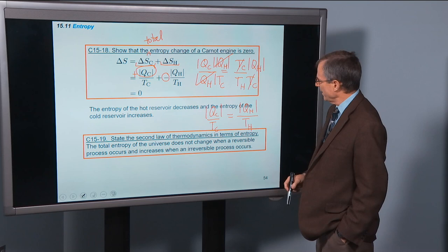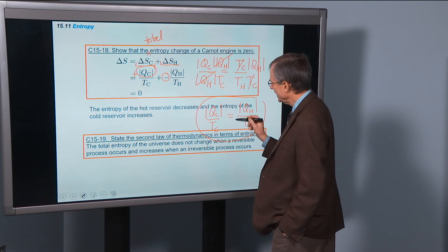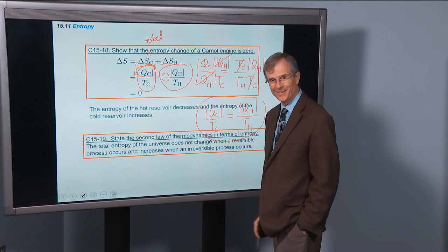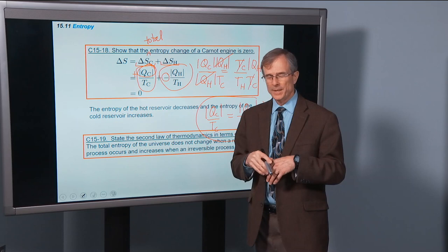We'll have a look at this equation and compare with this. Qc over Tc equals Qh over Th. So I can replace this by Qh over Th. And then I'm subtracting Qh over Th, and that just gives me zero. So the Carnot engine, there's no change in entropy for the Carnot engine.